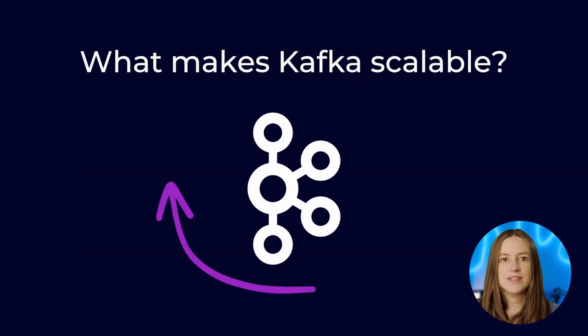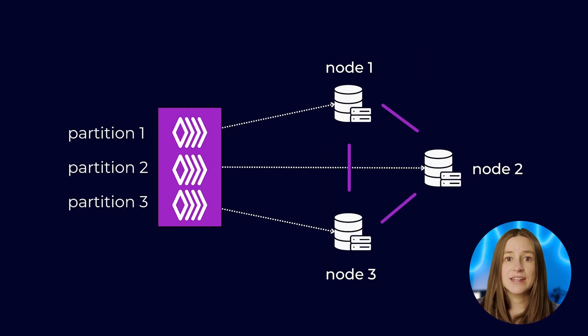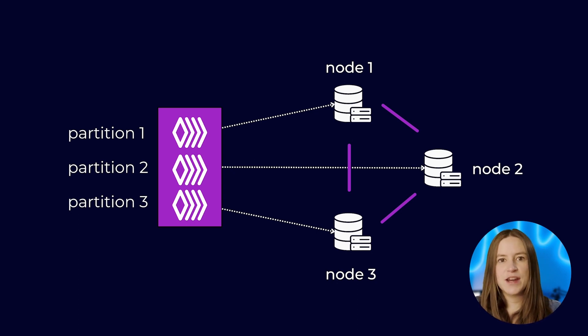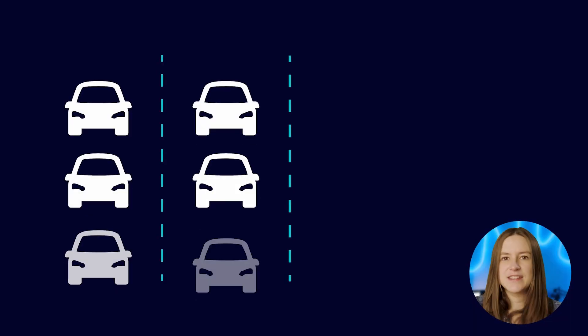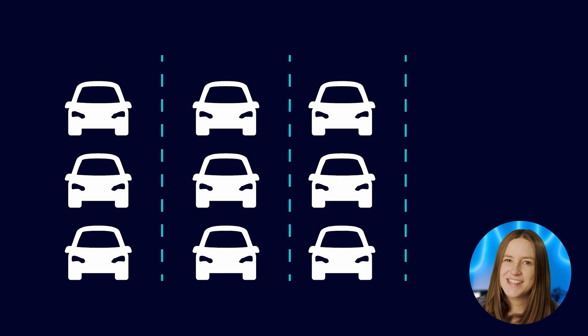Let's talk about scalability. We've mentioned that each partition can live on a different node in the cluster. This balances the work of writing to and reading from the partition across the cluster. This is also what makes Kafka uniquely scalable, because in any distributed system those topics could be handled by different brokers, but the partitions add another layer of scalability. You can think of this as a highway with lots of cars — the more lanes you add, the more cars you can get to your destination.